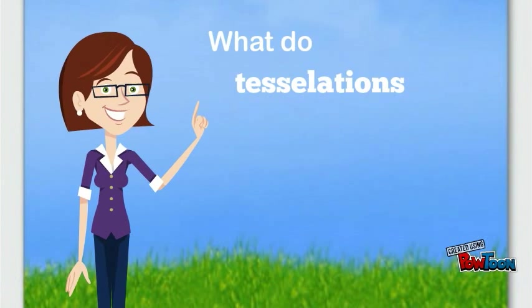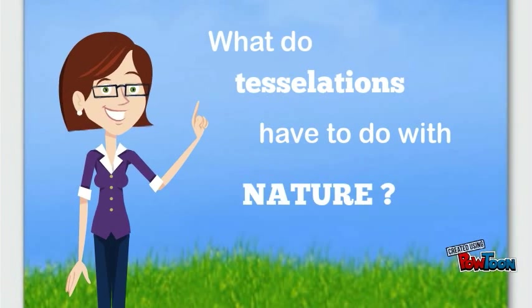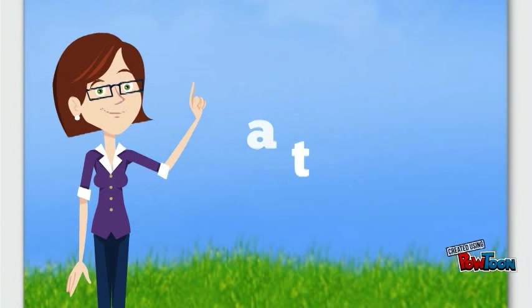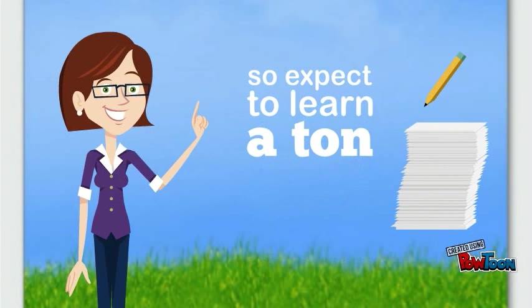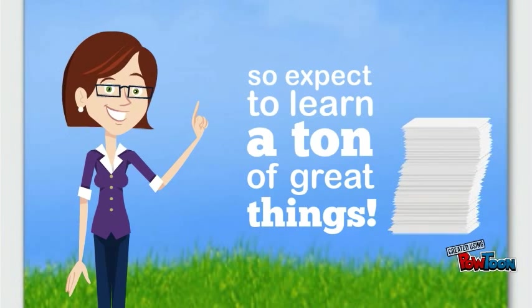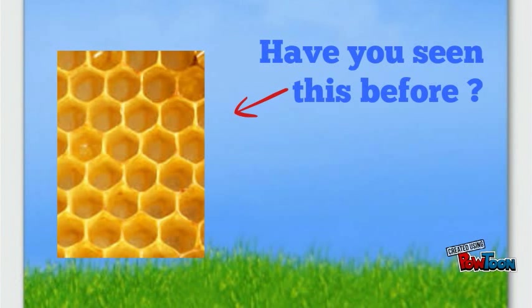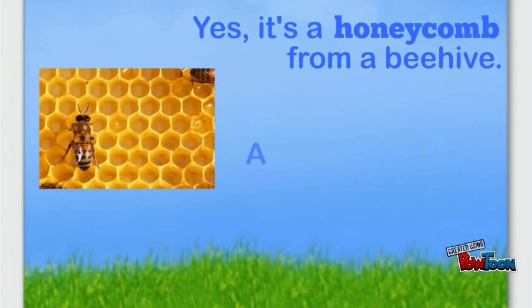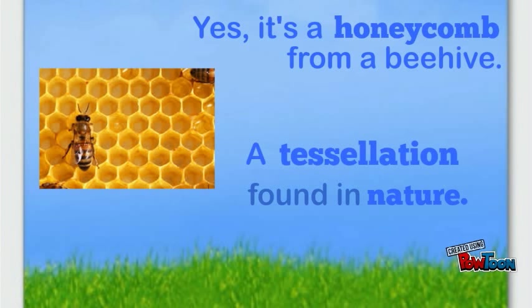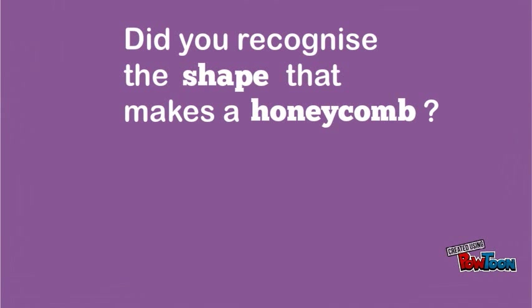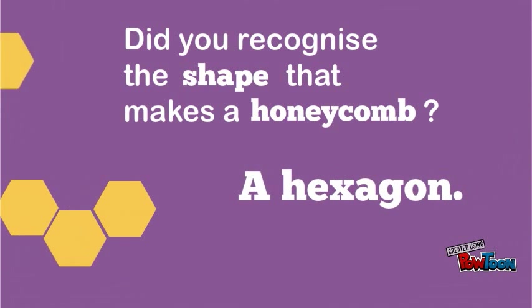What do tessellations have to do with nature? A ton, so expect to learn a ton of great things. Have you seen this before? What is it? It's a honeycomb from a beehive — a tessellation found in nature. Did you recognise the shape that makes a honeycomb? A hexagon.